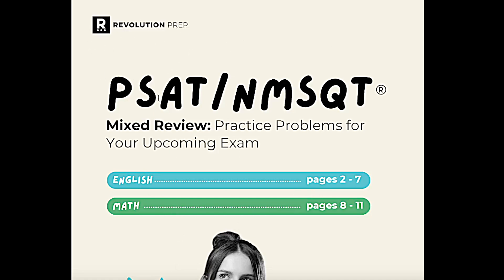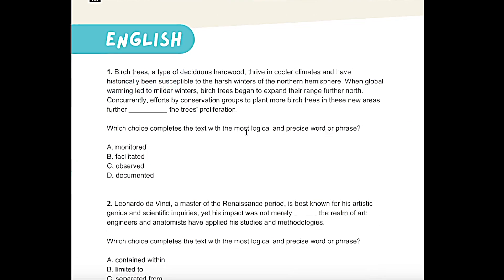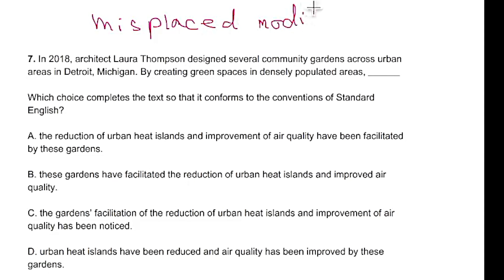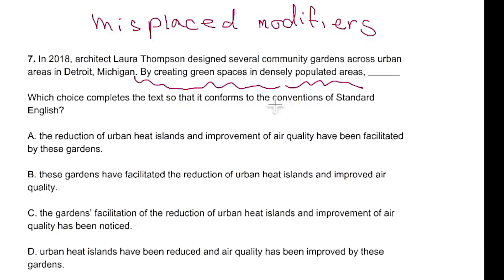These next two problems come straight from a packet linked in the description — almost 12 pages of practice problems. The English question is one of my favorites: what we call misplaced modifiers. These are easy to find because they always have an introductory phrase and then four answer choices that are basically the same sentence worded differently. All you're doing is matching that introductory phrase to whatever it's modifying — specifically, the subject of each answer choice, because an introductory phrase always modifies the subject.